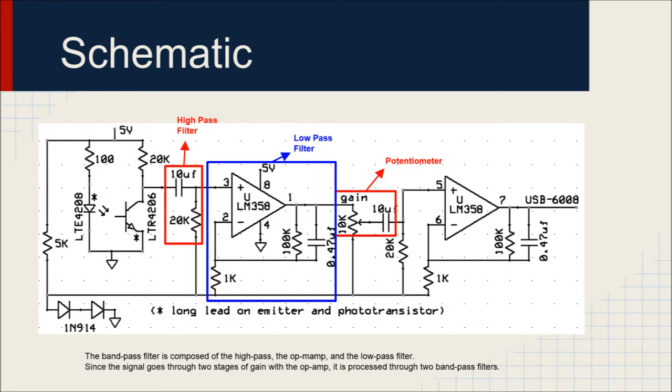Our circuit required several stages of gain. This was mainly because our initial signal amplitude was very small and we needed to make it identifiable once it was seen as an output. This was done in several stages since this is the better way to reduce noise.